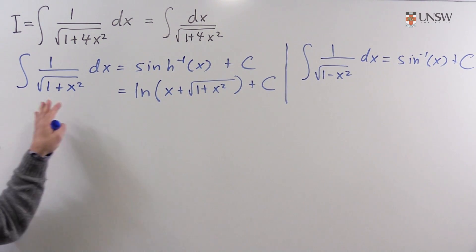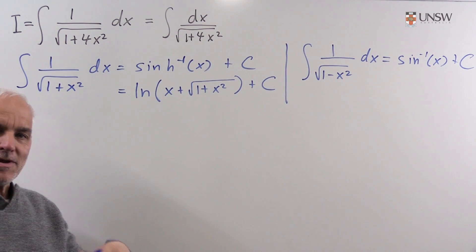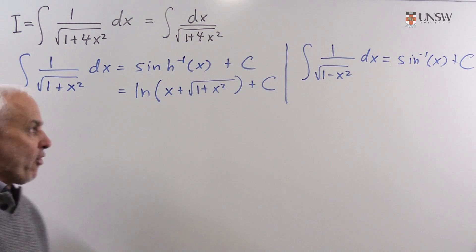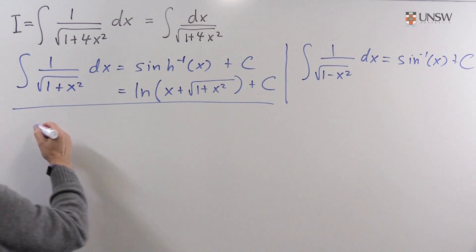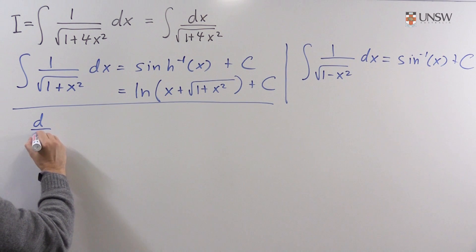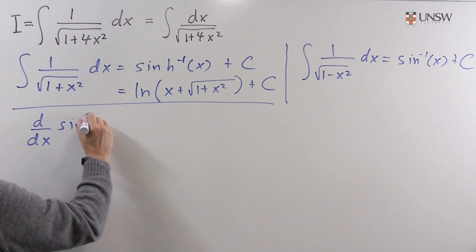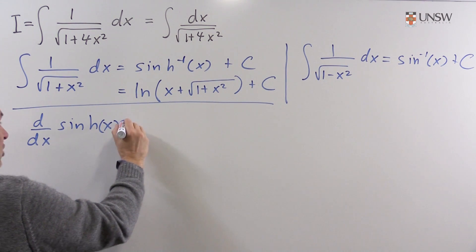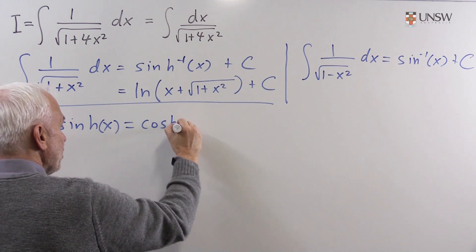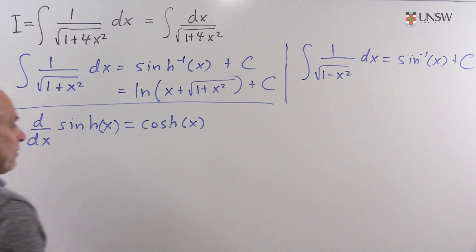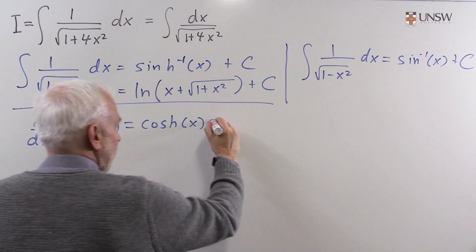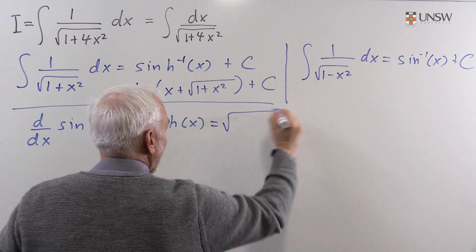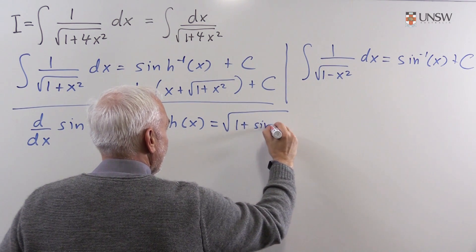Now both of these formulas come from corresponding differential formulas. So this one comes from essentially the fact that the derivative of the original function sinh x is cosh x, which is square root of 1 plus sinh squared x.